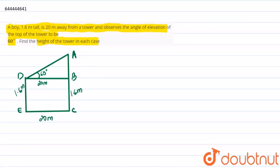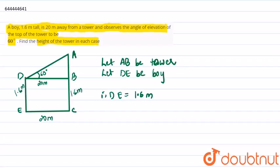Let AB be the tower and let DE be the boy. Therefore, we have been given that DE equals 1.6 meters, and we have been given the distance between them, that is EC equals DB equals 20 meters.